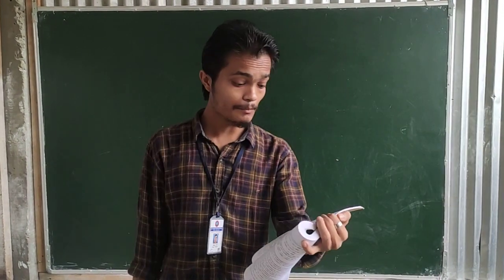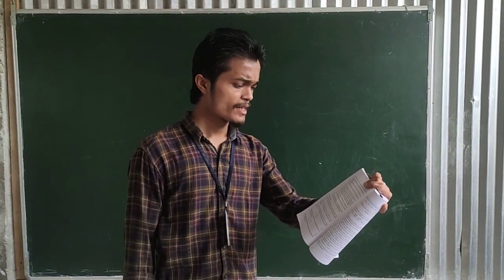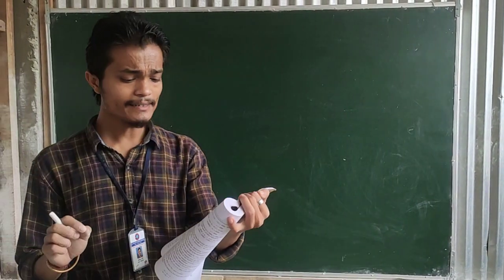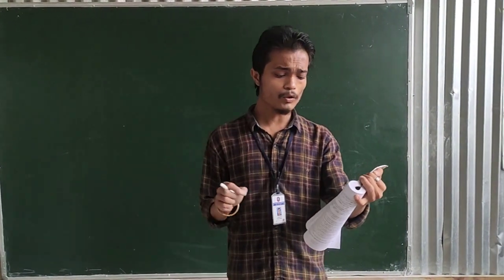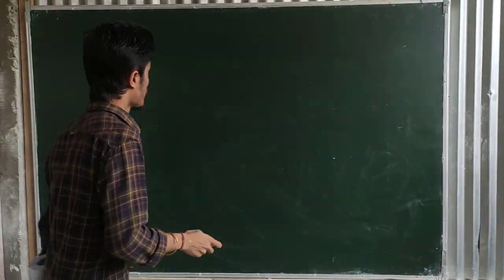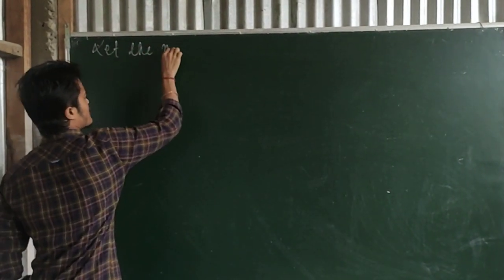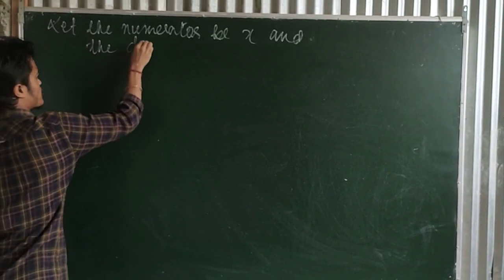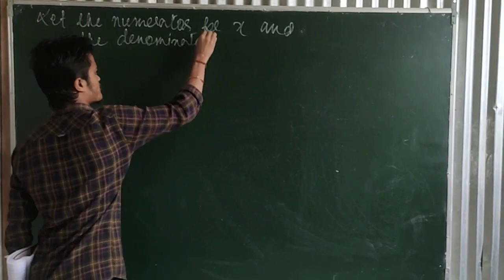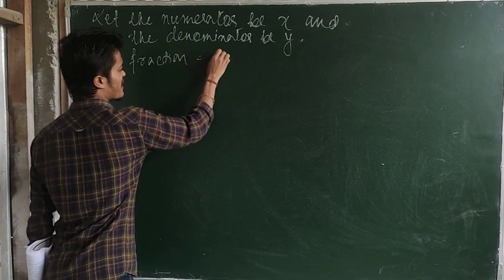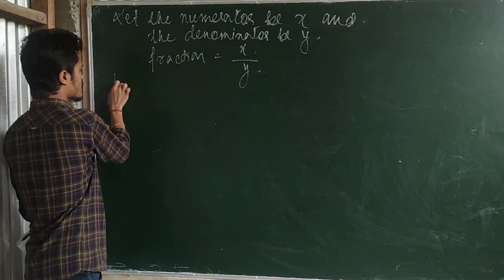For the next problem, question number 5: a fraction becomes 9 by 11 if 2 is added to both the numerator and denominator. If 3 is added to both the numerator and denominator, it becomes 5 by 6. Find the fraction. Since the question is about a fraction, let the numerator be x and the denominator be y, so the fraction is x by y.